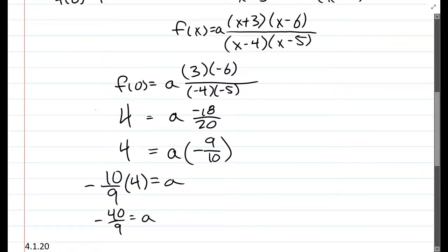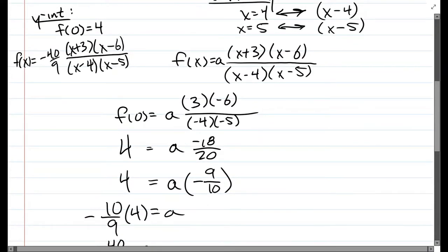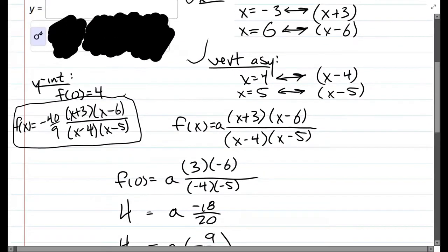And so all we're going to do is just put all this back in with that value in for a. And we'll write our answer over here. Negative 40 ninths, x plus 3, x minus 6 divided by x minus 4, x minus 5. All right. And this is our answer right here. Hopefully. We're about to see.